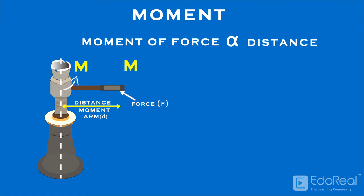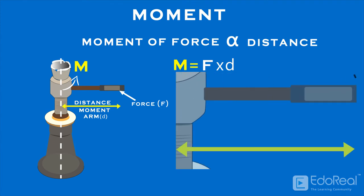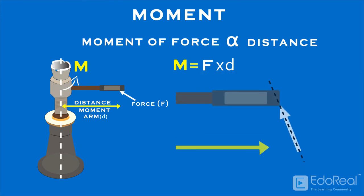Generally, moment is defined as the product of the force F and the moment arm D. The moment arm or lever arm is the perpendicular distance between the line of action of the force and the center of moments.